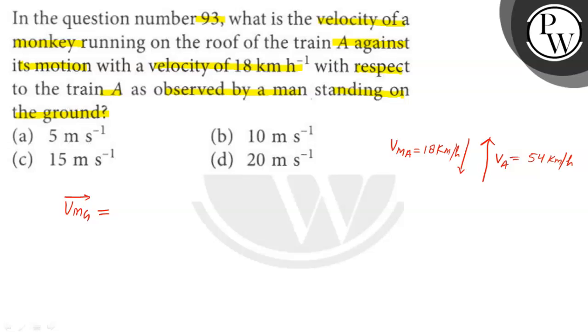Vmg, so we know that velocity of a monkey with train A is equal to velocity of a monkey with respect to ground minus velocity of train A with respect to ground.